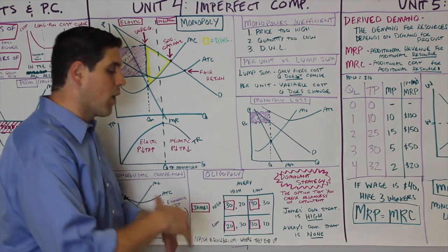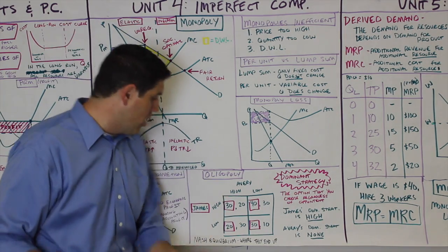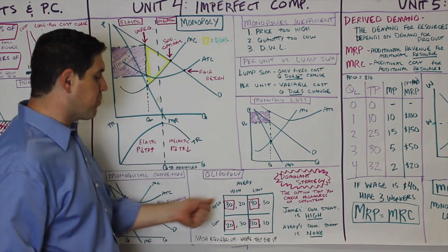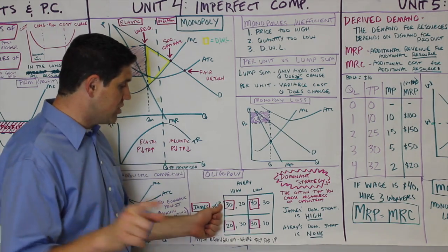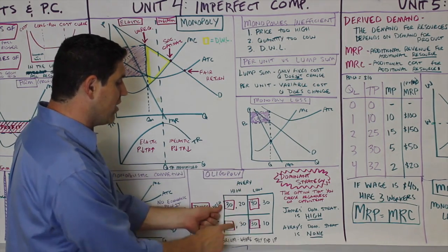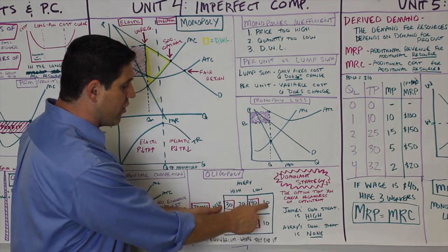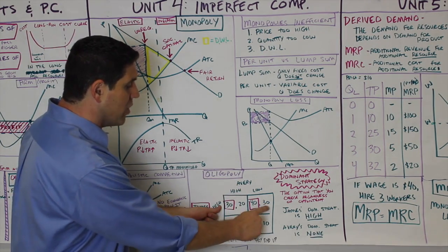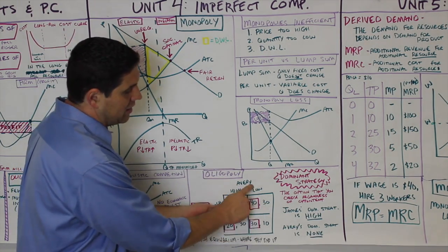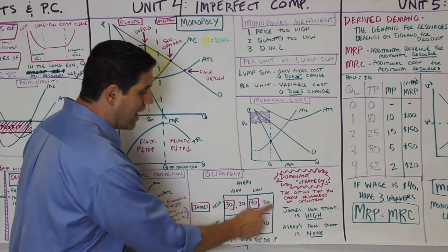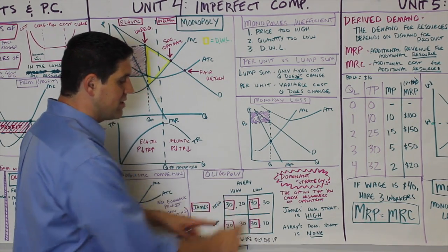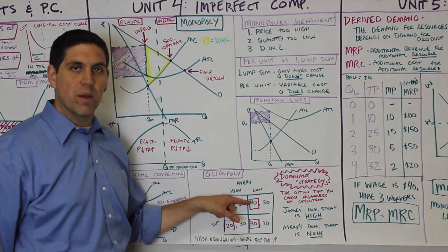A Nash equilibrium is where they're going to end up. Since James always prices high due to his dominant strategy, Avery would rather go low to get $30 instead of $20. So that outcome — James high, Avery low — is their Nash equilibrium. That's where they'll end up every single time.